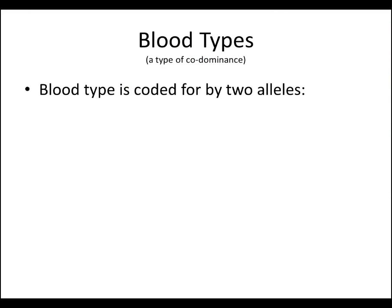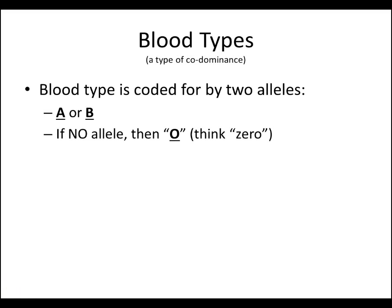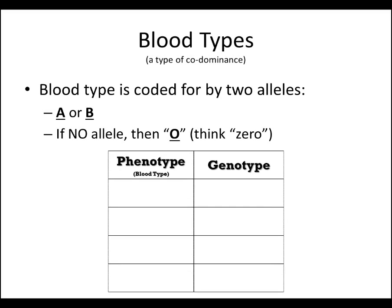Blood types are another example of codominance. Your blood type is coded for by two alleles — A or B. You're probably wondering: isn't there another blood type? Yes, there is — it's O. If you don't have an A allele or a B allele, then you have blood type O. Think of it as like a zero.